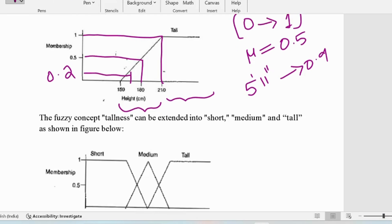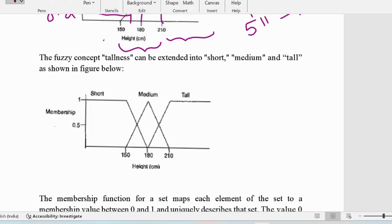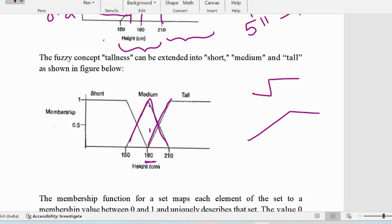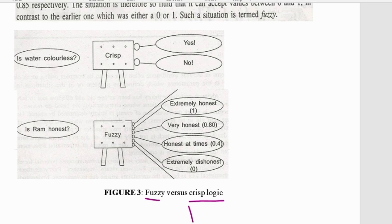This can also be extended to other sets like short, medium, and tall. Binary logic has a sharp edge function, whereas in fuzzy logic we have slopes. Tall has a slope on one side, medium has slopes on both sides, and short has a slope on the other side. A person of 180 cm is in the medium height but also belongs to the short and tall sets in a very small manner.